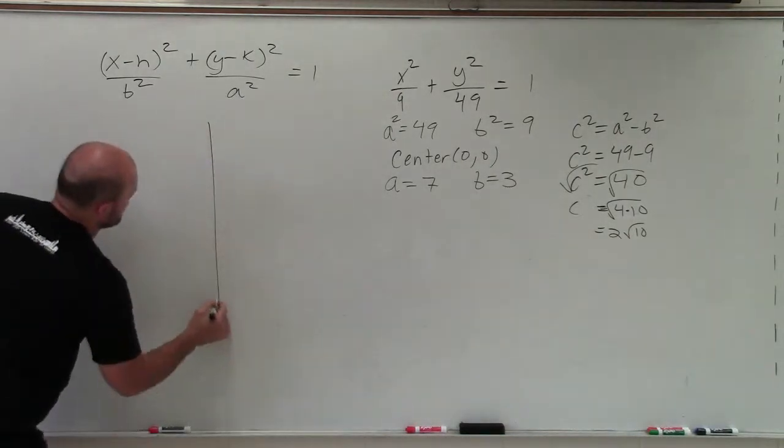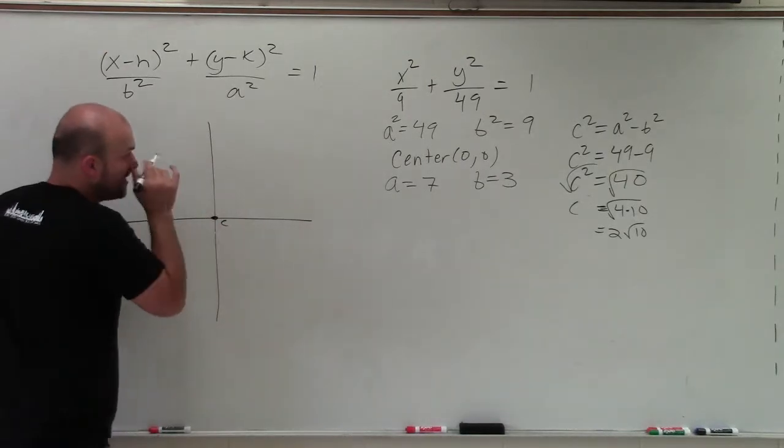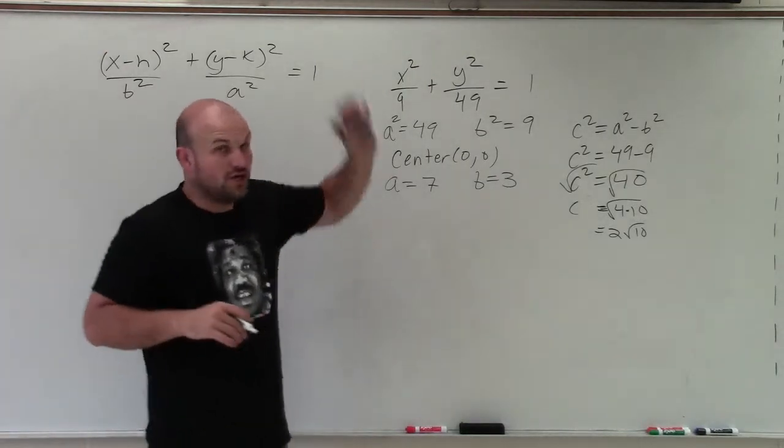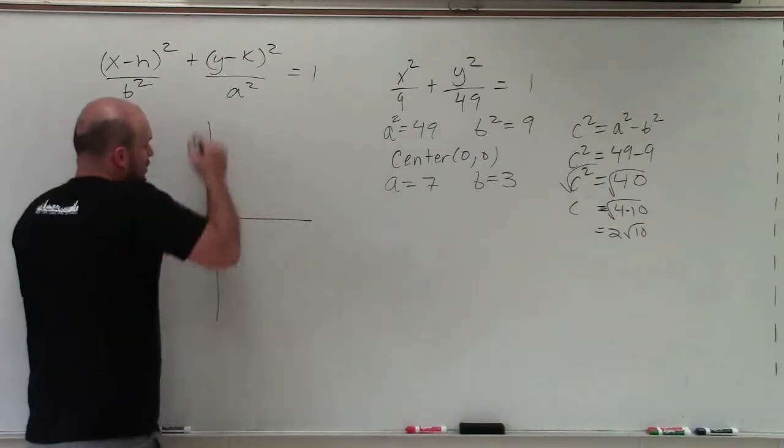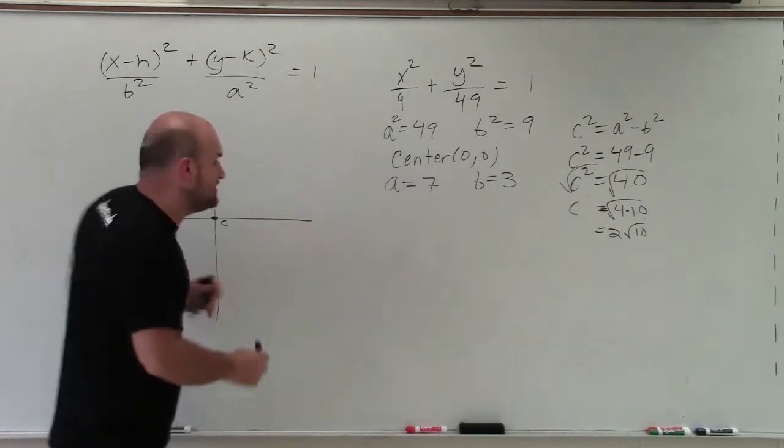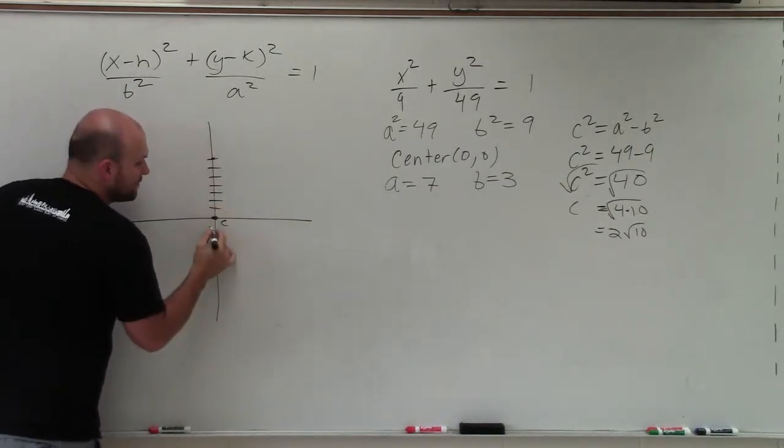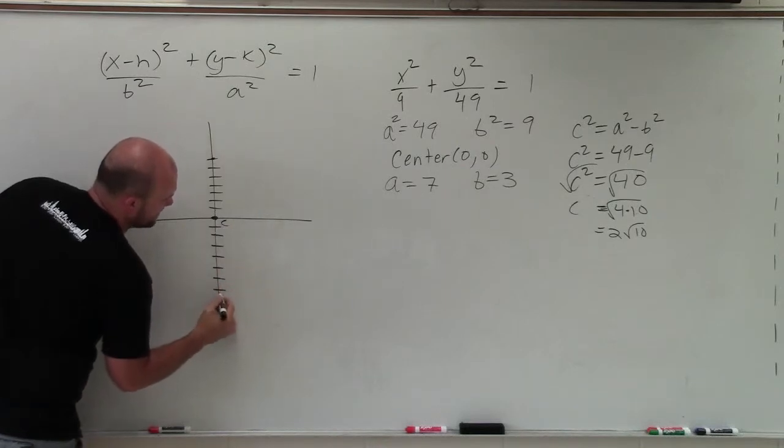So we have a center at 0, 0, right? That one's easy. Now, again, remember I said it's going to go vertical. So from the center, we're going to go up and down to our vertices. And the distance to our vertices is a, which is 7. So I'm simply just going to go up 7, 1, 2, 3, 4, 5, 6, 7. And down 7, 1, 2, 3, 4, 5, 6, 7.